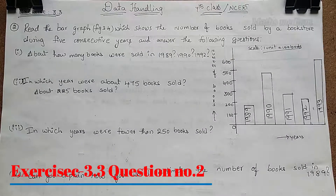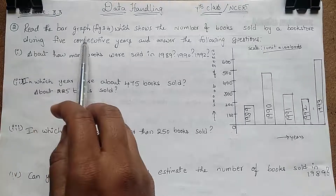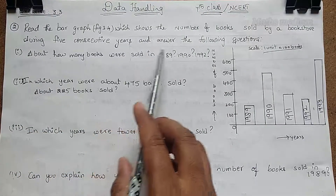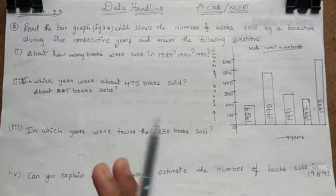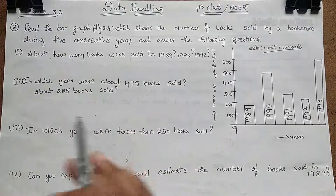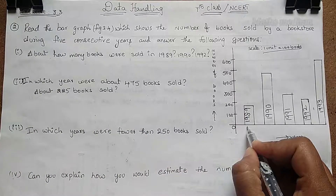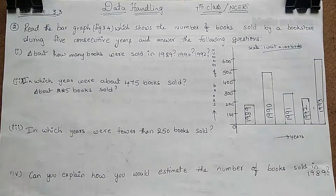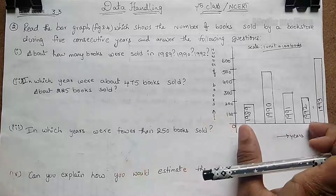Hi, hello, welcome to Maths Medium. Today I came with a topic: Data Handling from 7th class NCERT, Exercise 3.3. The question was: read the bar graph which shows the number of books sold by a bookstore during 5 consecutive years and answer the following questions. We have to analyze the given questions through the bar graph and find the answers.